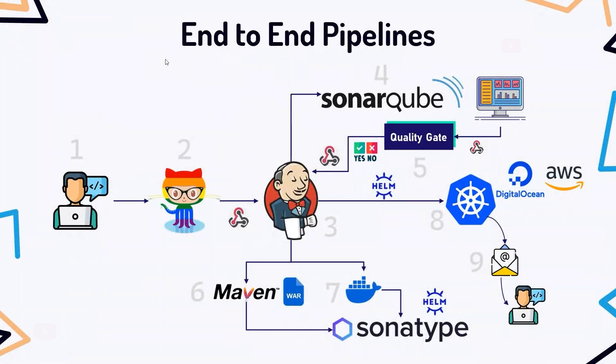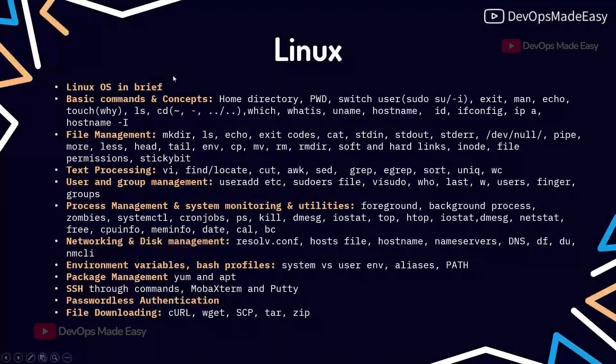This covers all the DevOps tools — Git, Jenkins, Maven, SonarQube, Nexus, Kubernetes, Docker — everything covered in end-to-end pipelines.